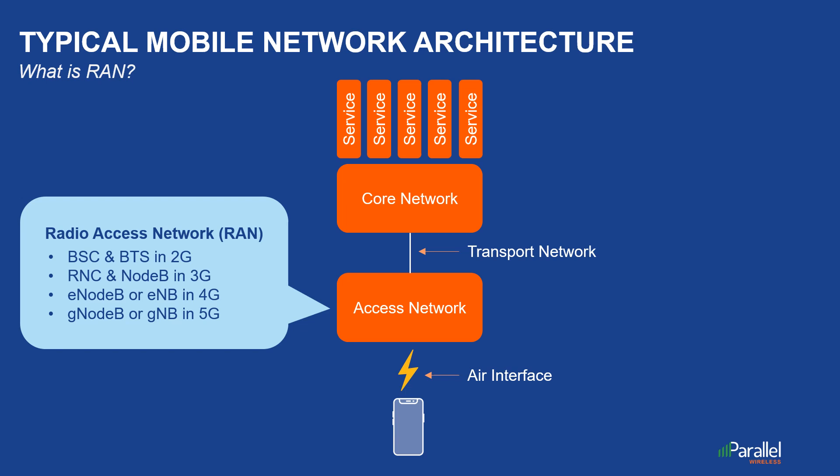In 3G UMTS, it means radio network controller, or RNC, and Node B. In 4G LTE, due to flattening of the network architecture, there is just one node, the evolved Node B, or eNodeB.